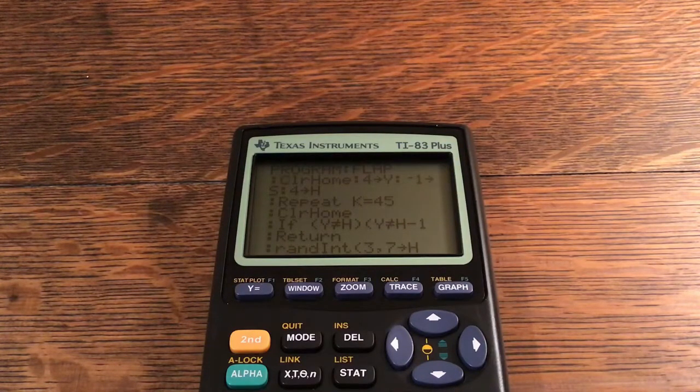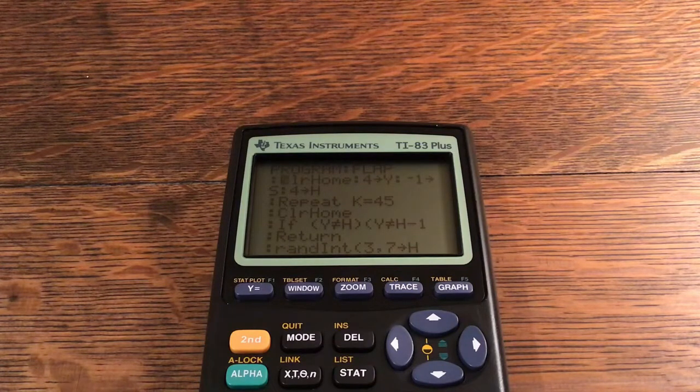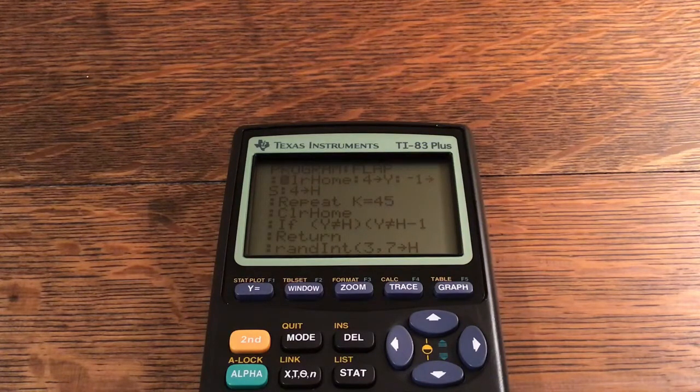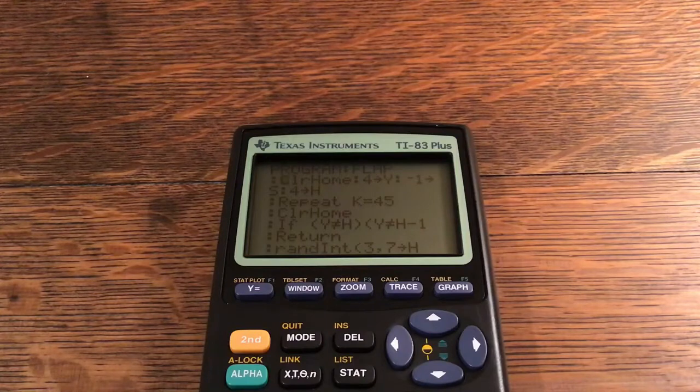Y is the position of the bird, S is your score, and H is the height of the pipe. Repeat until K=45. ClrHome. If Y≠H and Y≠H-1, Return or end the program. And the reason I don't use Stop is because Stop can cause issues, so that is the reason why I use Return as opposed to Stop.